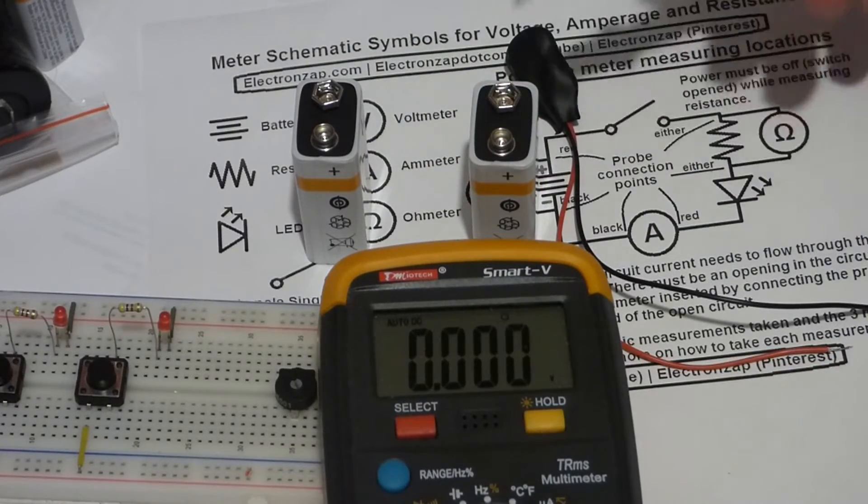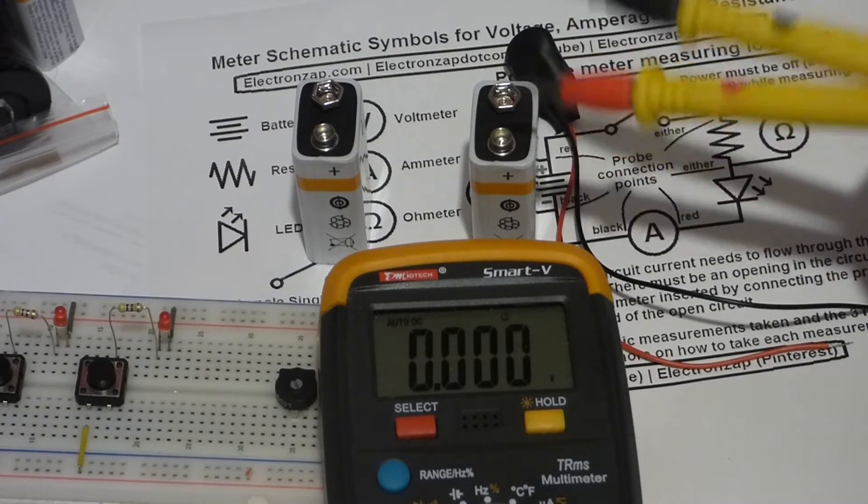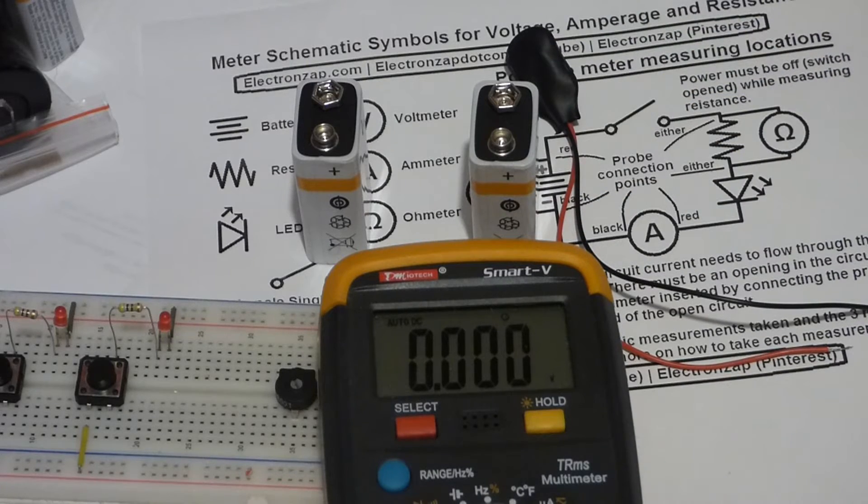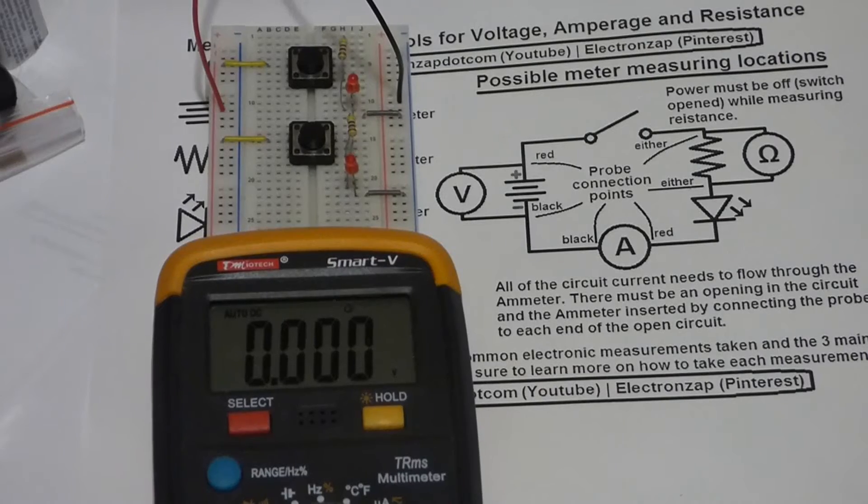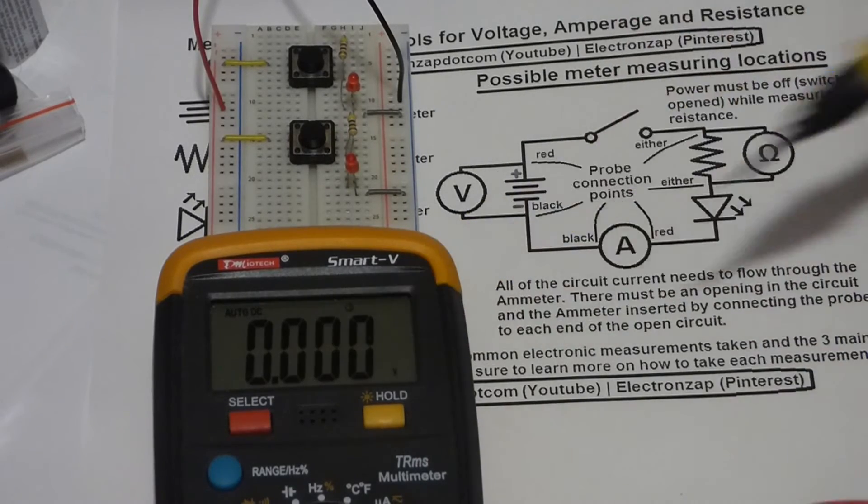If it was getting down towards seven volts or whatever, I may decide it's time to get a new battery depending on how it's affecting my circuits. But if you have a problem with your circuits, definitely checking the battery voltage is a good idea.